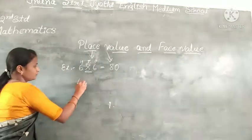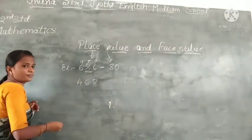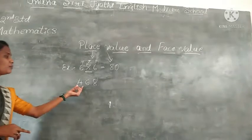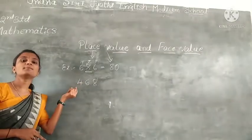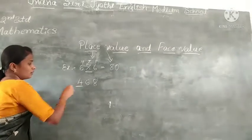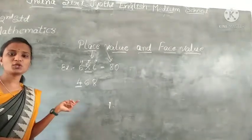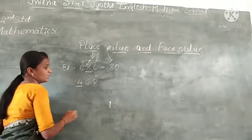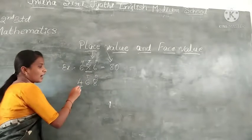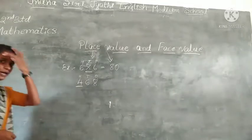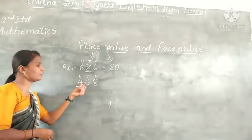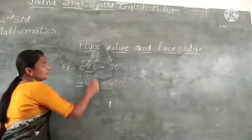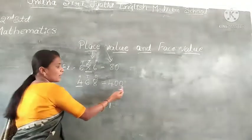And another example — see here, in 468, you have to find the place value of 4. 8 is in the 1's place, 6 is in the 10's place, and 4 is in the 100's place. So 4 is in the 100's place. Therefore, the place value of 4 is 400.